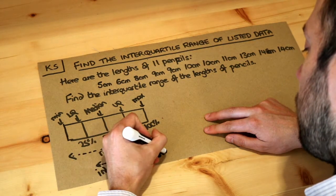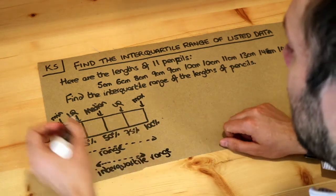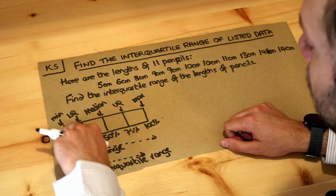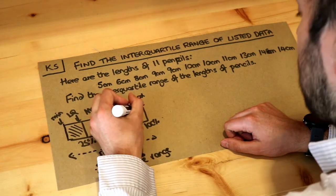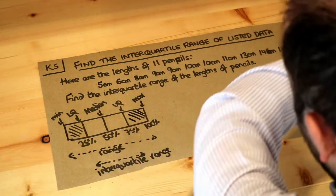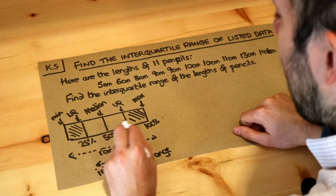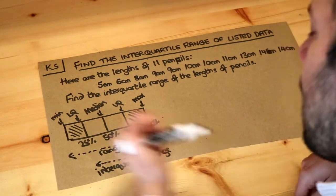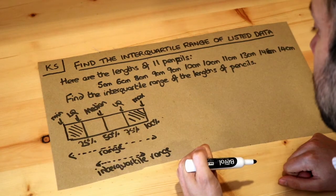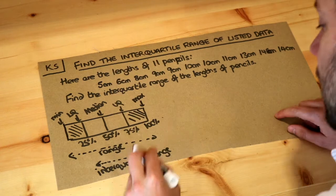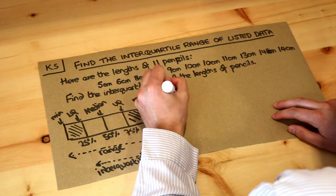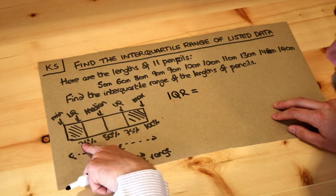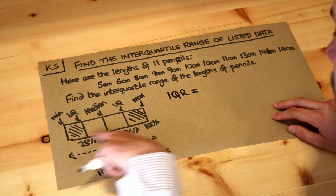The reason it's useful is that if we get rid of the lowest quarter of values — the most extreme values at the bottom end — and get rid of the extreme values at the top end, it tells us how spread out the bulk, the middle lot, of your data is. That's quite a useful value. So the interquartile range, or IQR for short, is equal to the upper quartile minus the lower quartile — UQ minus LQ.